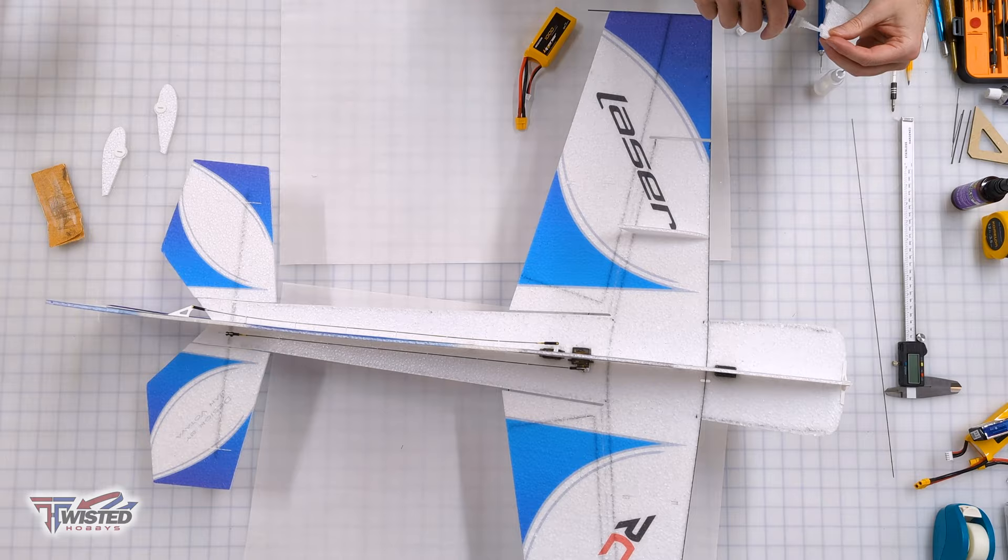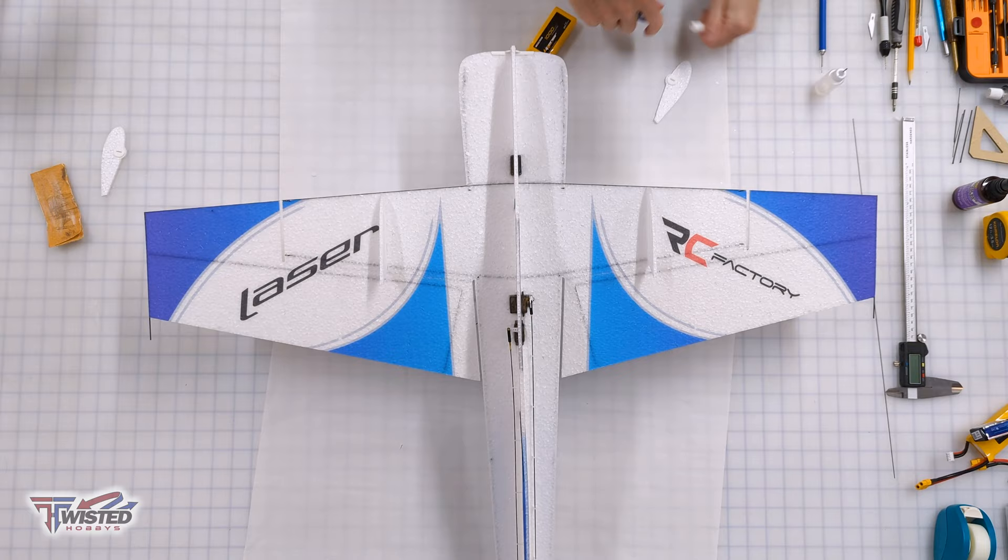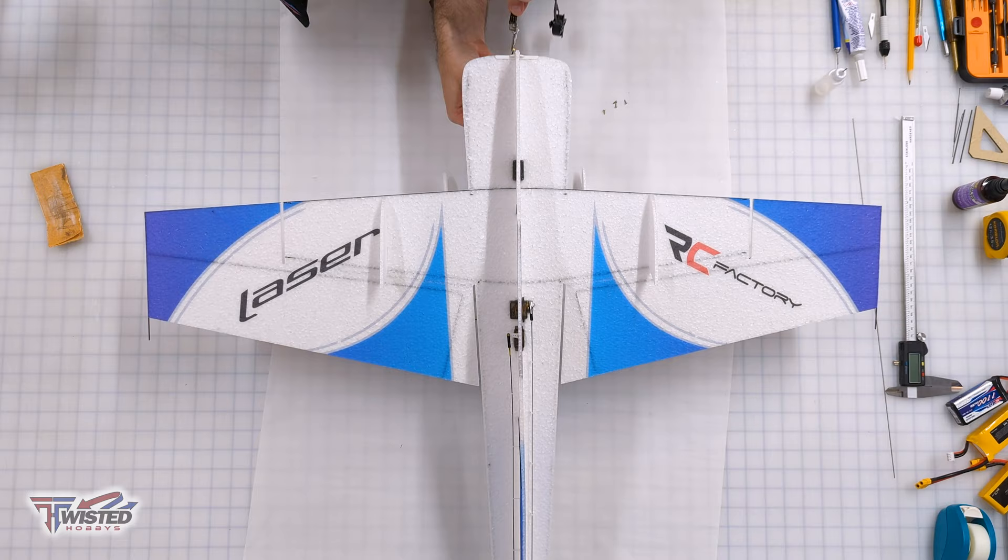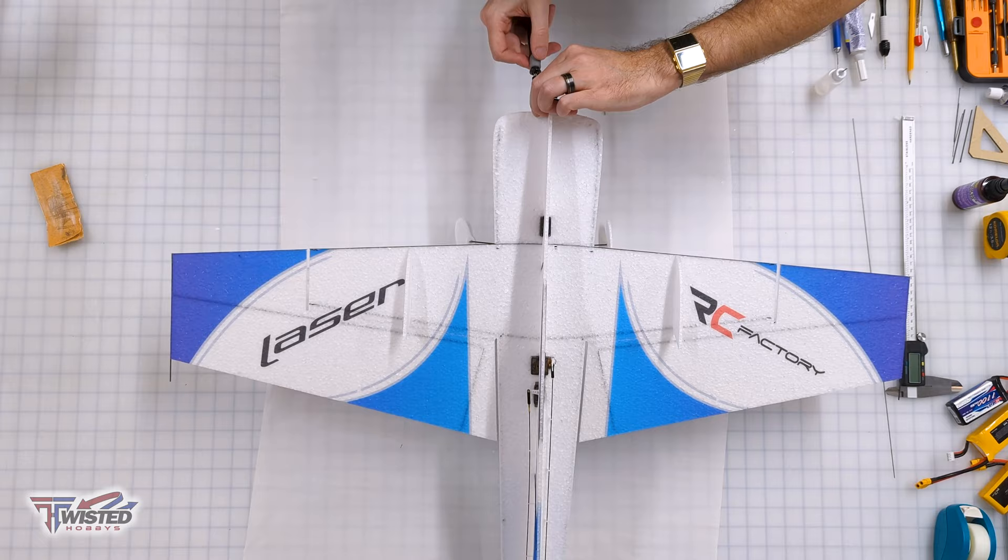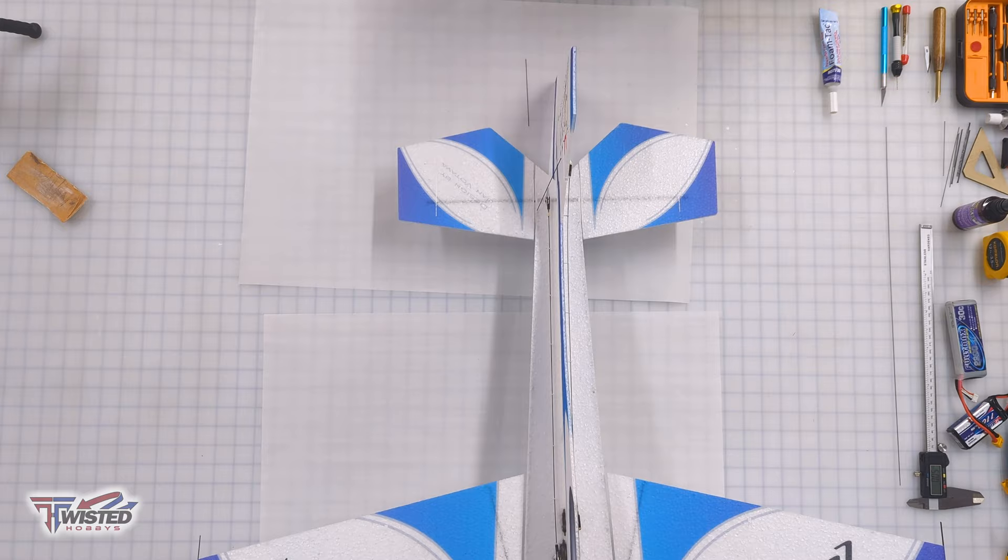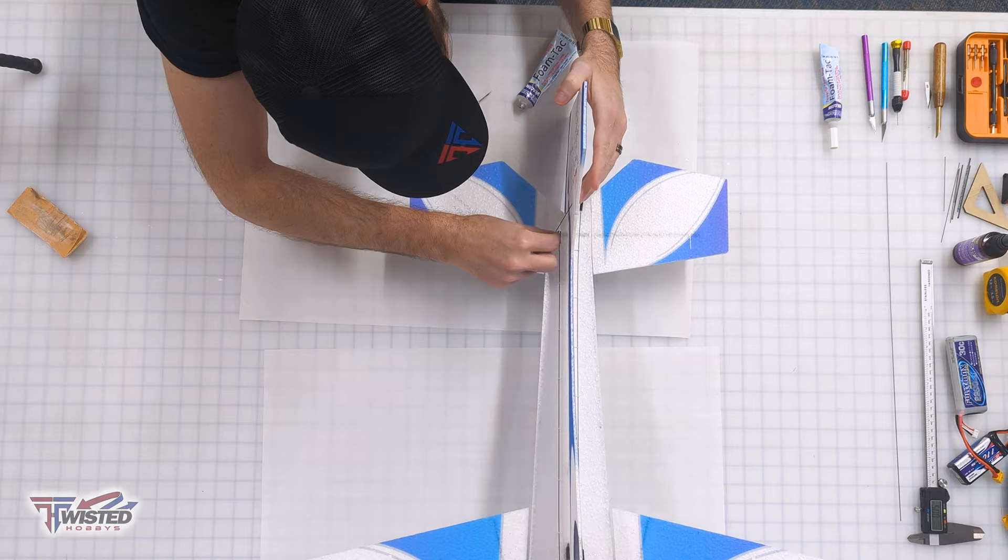Then we'll install those top side force generators and then the wheel pants. Then go in the electronics. So I'm putting on the motor, the ESC and the receiver. And there's two more carbon fiber supports on the vertical stabilizer.